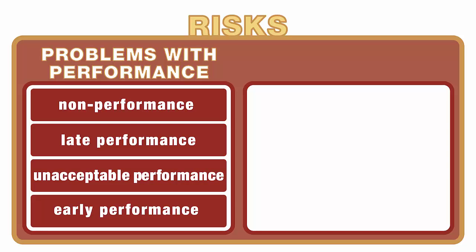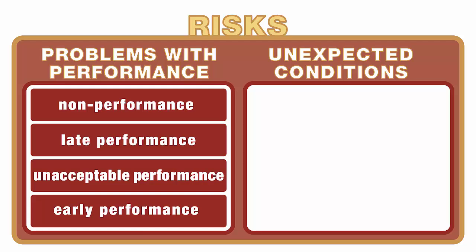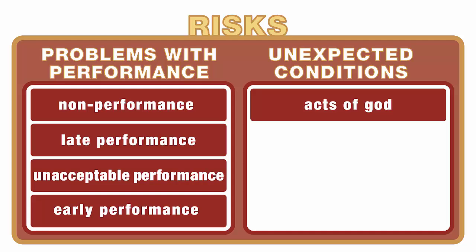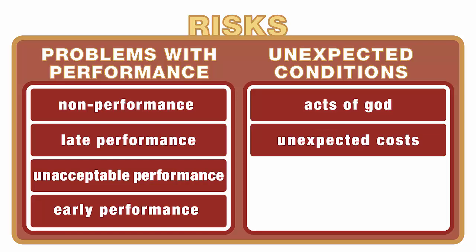The other type of risks associated with a contract have to do with unexpected conditions. The first of these would be what's called in the law acts of God — hurricanes, tornadoes, things that are outside of the control of men and therefore completely unexpected. Unexpected cost could also be a problem with a contract. We could have a contract made pursuant to the idea that oil costs $27 a barrel when in fact the price shoots up and the oil is priced at $57 a barrel. There are unexpected costs there.